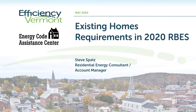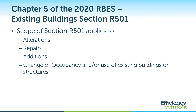Welcome to this session on existing homes requirements for the 2020 Vermont Residential Building Energy Standard, or RBES, as presented by Efficiency Vermont on behalf of the Energy Code Assistance Center. This session will cover specifically chapter 5 of the 2020 RBES, which applies to existing buildings. This session does not include the full content of compliance methods or requirements but only specifically calls out the individual requirements for existing homes.